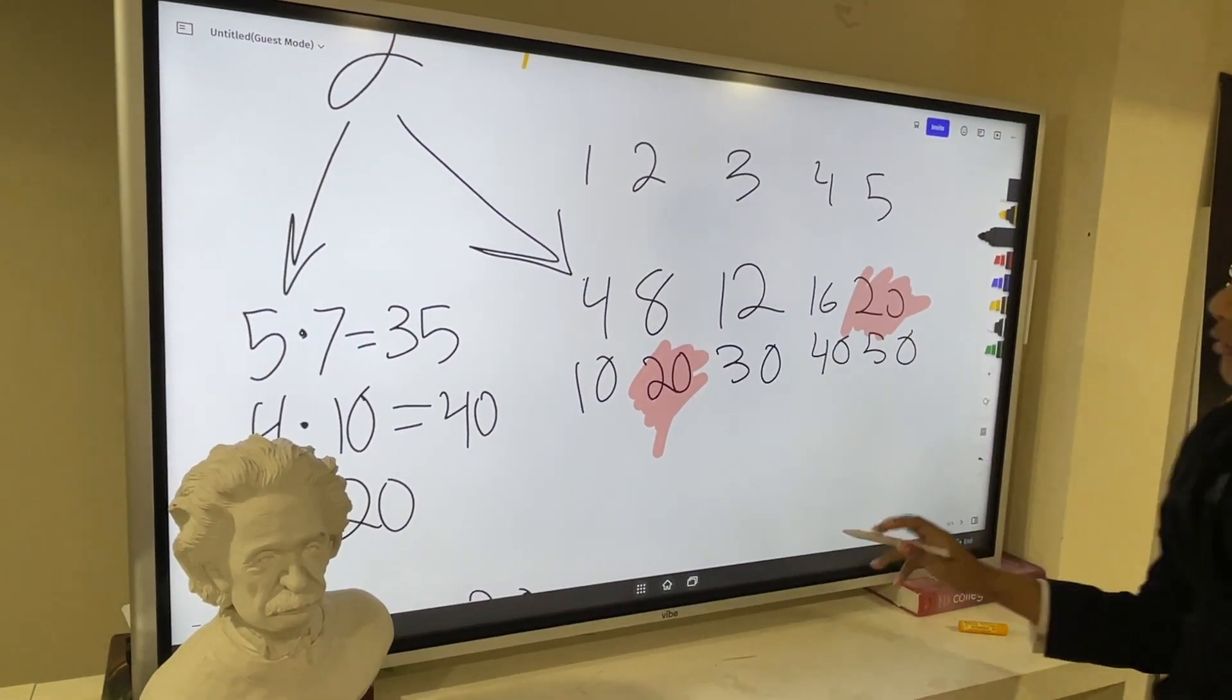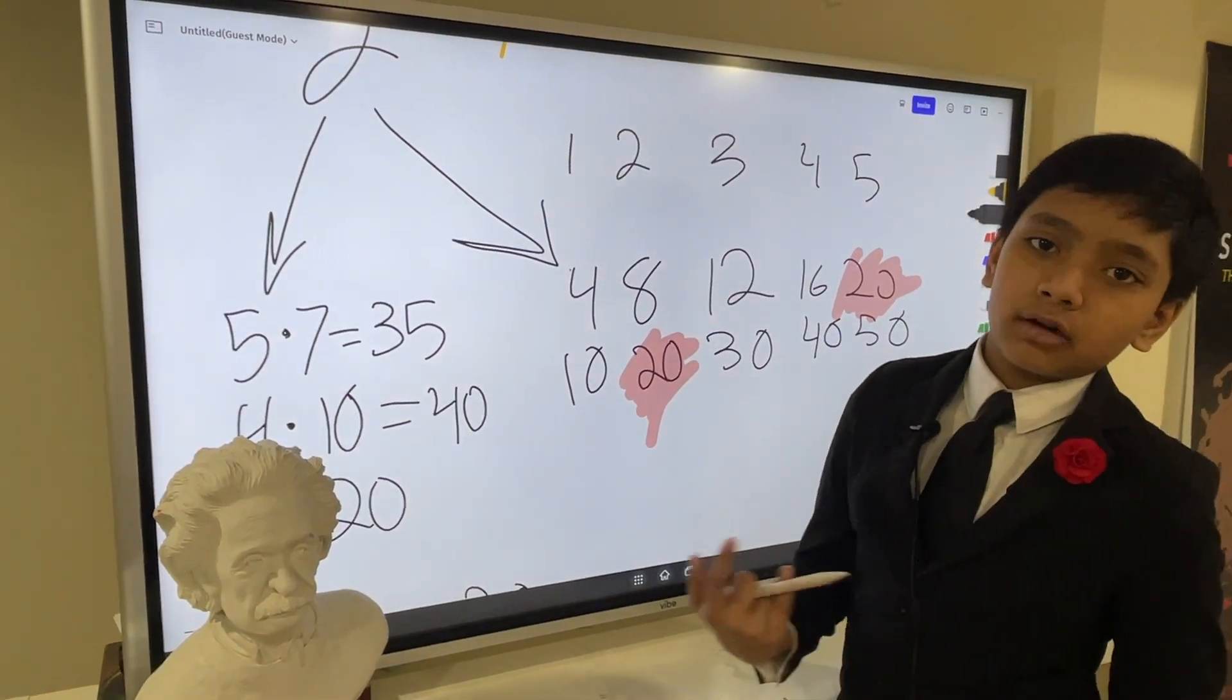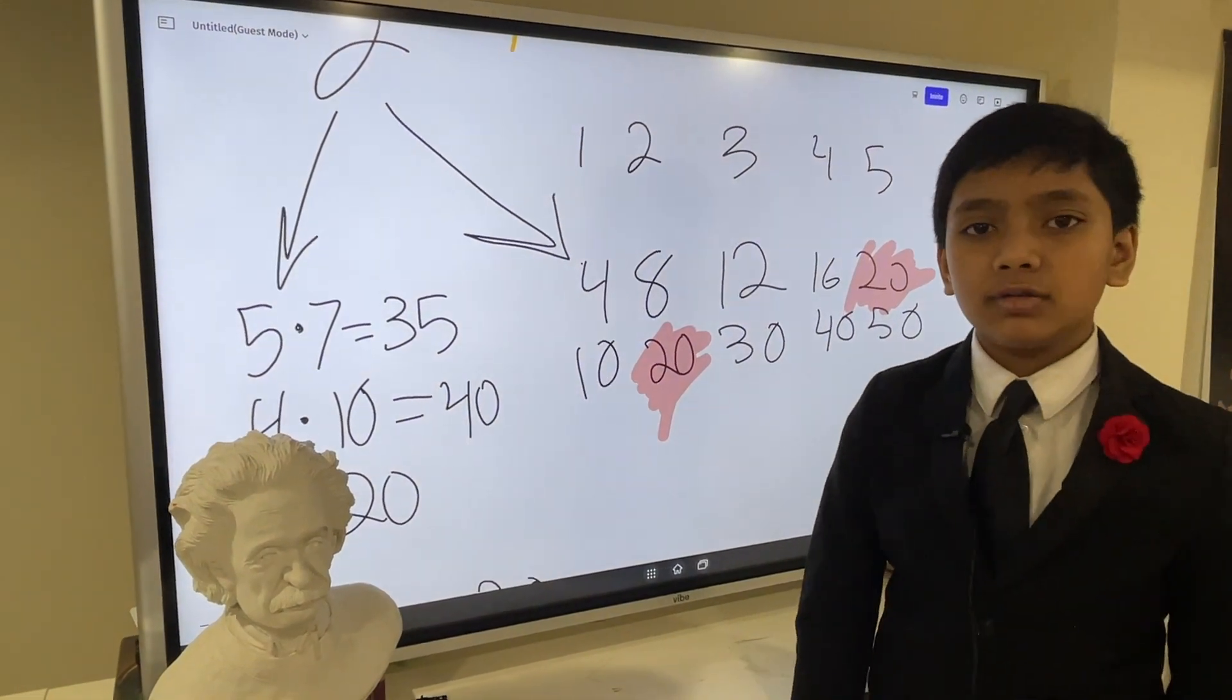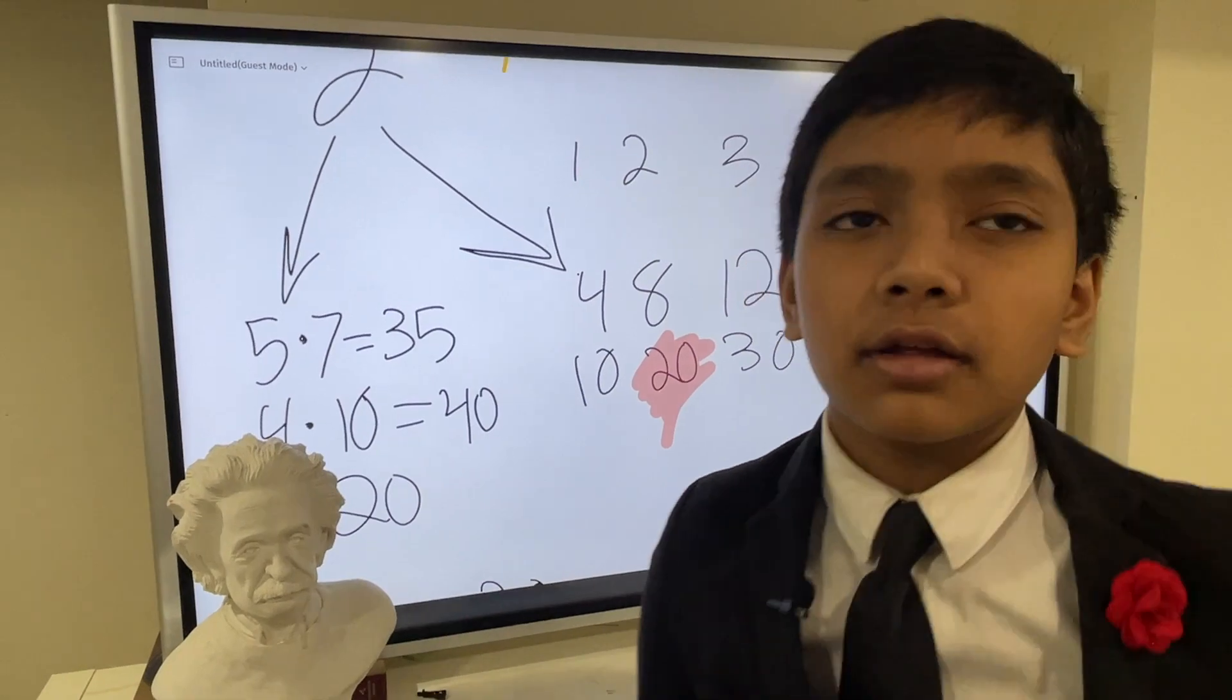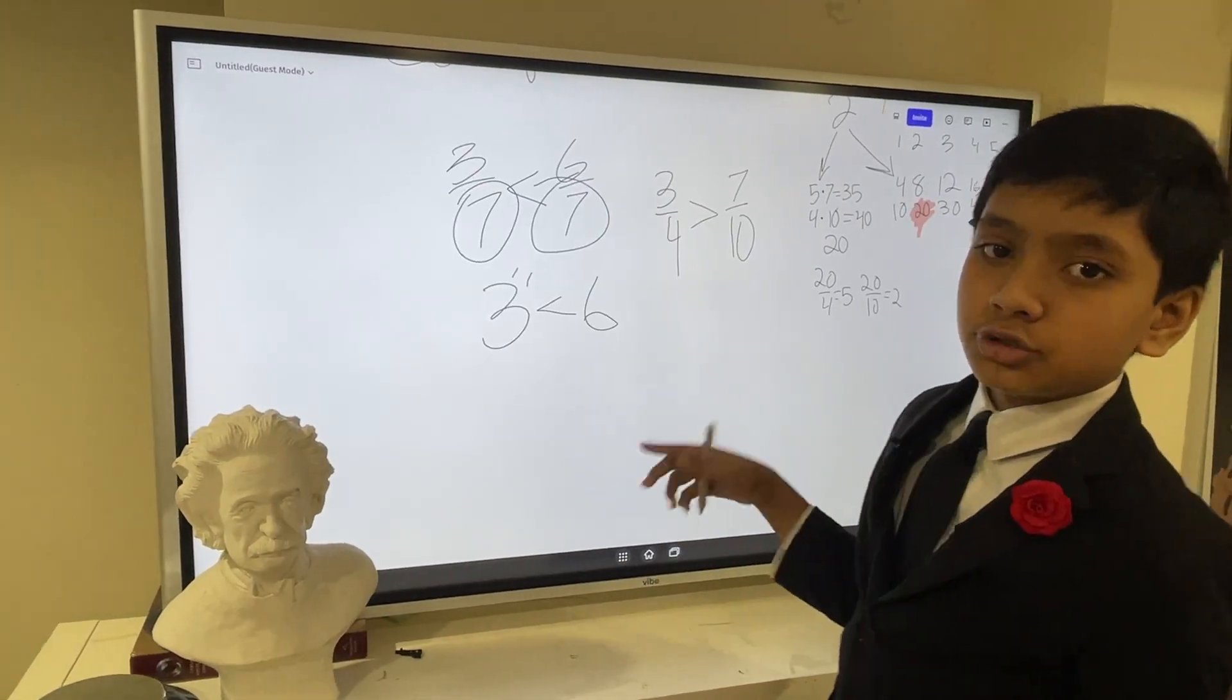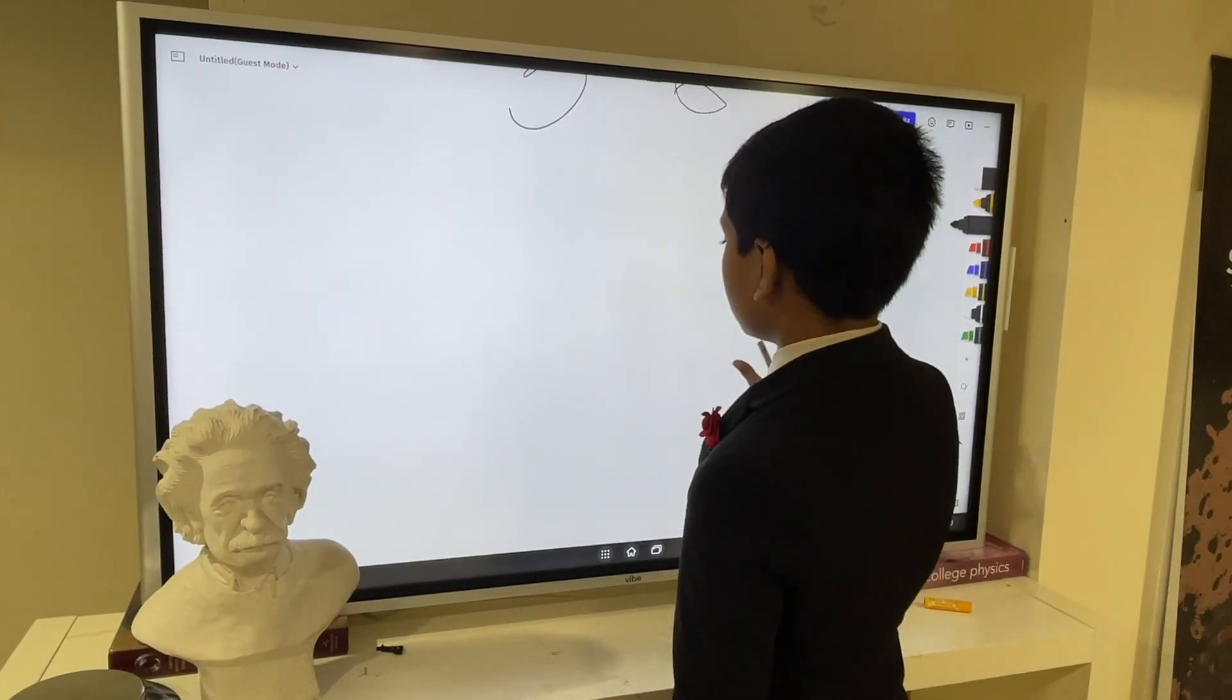But the process isn't always that easy. I don't have enough time to show the boring side of this process on the board, but if you want to, you can check that out on the worksheet I spent so long typing out. Please check it. So now let's use those two ways to find the common denominator.